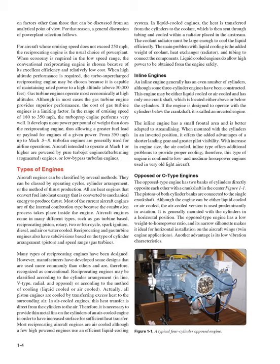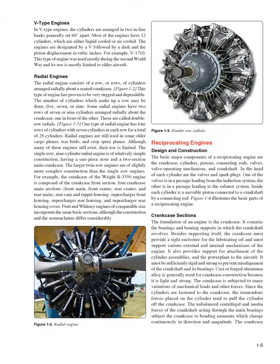The opposed-type engine has two banks of cylinders directly opposite each other with a crankshaft in the center. The pistons of both cylinder banks are connected to the single crankshaft. Although it can be either liquid-cooled or air-cooled, the air-cooled version is used predominantly in aviation, generally mounted with the cylinders in a horizontal position. The opposed-type engine has a low weight-to-horsepower ratio, and its narrow silhouette makes it ideal for horizontal installation on aircraft wings in twin-engine applications. Another advantage is its low-vibration characteristics. In V-type engines, cylinders are arranged in two inline banks generally set 60 degrees apart, most having 12 cylinders. This type was used mostly during World War II and its use is now limited to older aircraft.